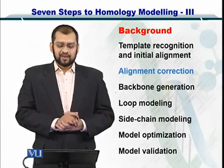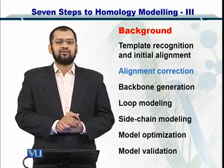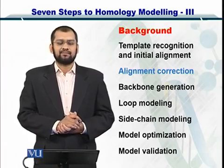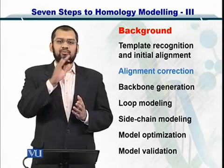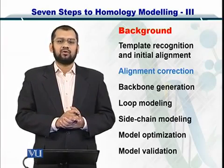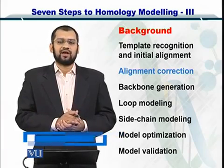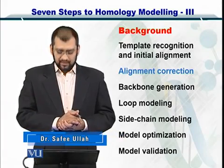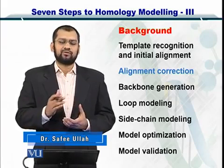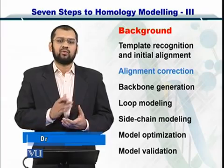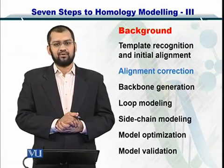The seven steps in order are: template recognition and initial alignment, followed by alignment correction, then the generation of the backbone, followed by loop modeling and rotamer association — also called side chain modeling. Next is model optimization, and then once all of these steps are done, you want to validate the model — the structure that you have computed.